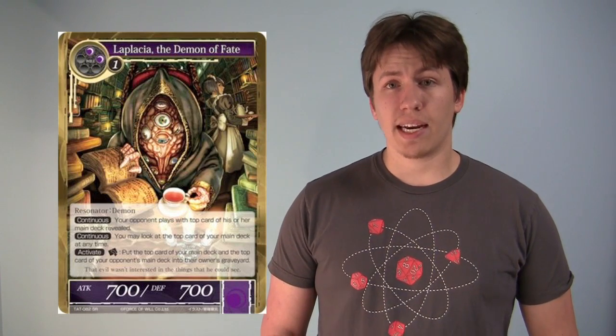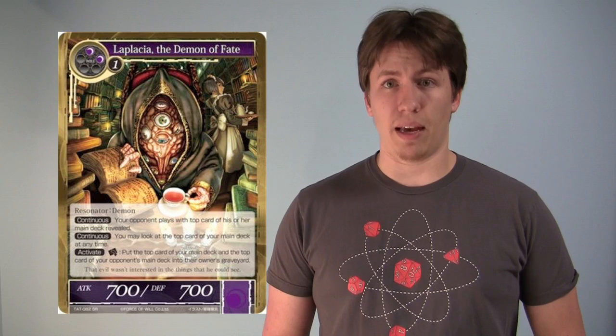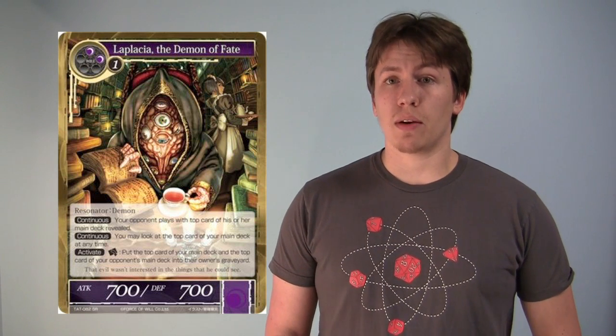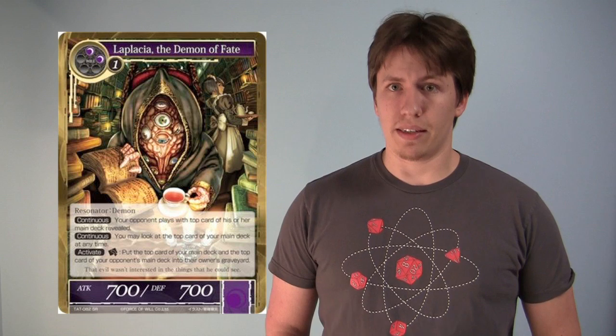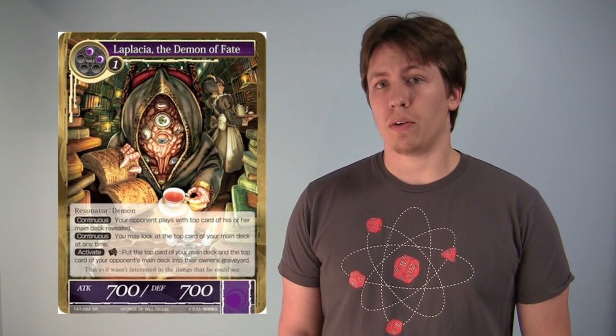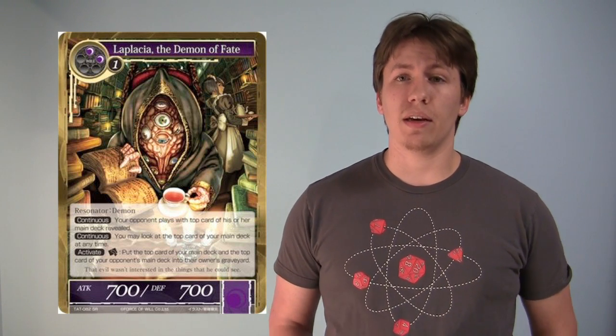Jumping to resonators real quick, they have some specific things that are only for them. In the gray box in the middle, it will say Resonator colon and then some text. That is the card's race. The race of a card is important when it comes to other cards that will be played later in the game.